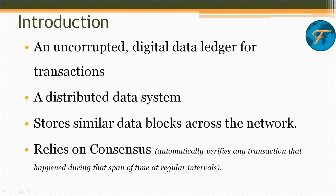The data in blockchain is of a distributed nature — not controlled by a centralized entity but by a decentralized or distributed entity. It stores similar data blocks across the network; similar data types are stored across the network. Finally, it relies on something called consensus, which means transactions happening through a blockchain are verified automatically and frequently at fixed intervals. To sum it all up: similar data is stored in the form of blocks and slots, secured by a hash key, and any transaction is automatically verified at regular intervals.